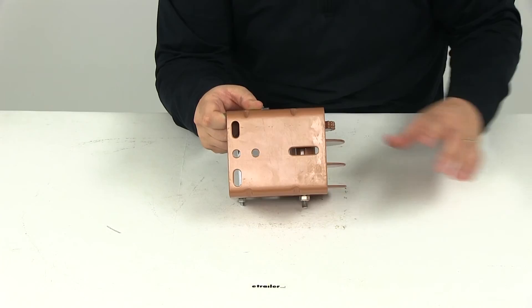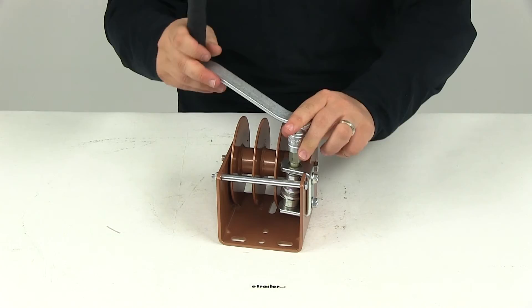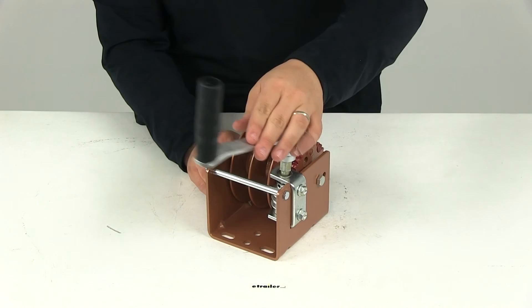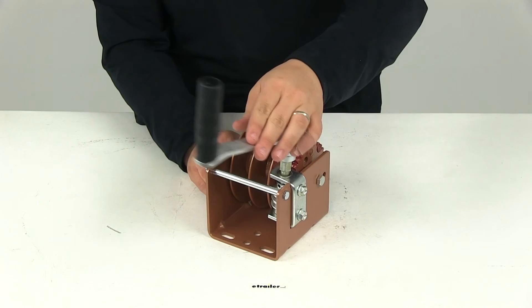Going to spin this a couple times that way you can see how smooth operation is. Again it's going to have a gear ratio of thirty to one. That's going to do it for our review of part number DL 10965 this is the Dutton Lanson worm gear hand winch with the hex drive and split reel for two cables.